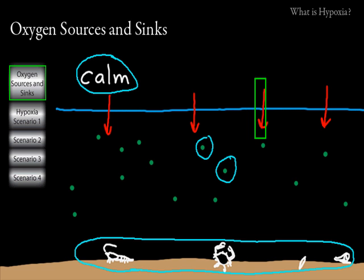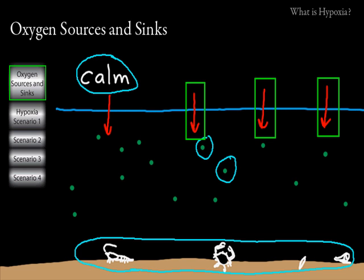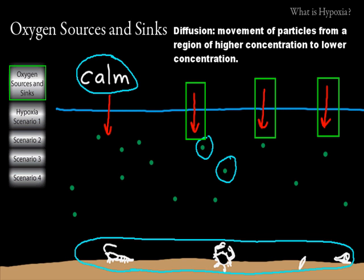When you see these red arrows here, those are describing oxygen being input into the system. One of the main ways that oxygen is put into a system is by diffusion. Diffusion is the movement of particles from an area of higher to lower concentration. So if there's a higher concentration of oxygen in the atmosphere, oxygen will diffuse across the surface of the water into the water.